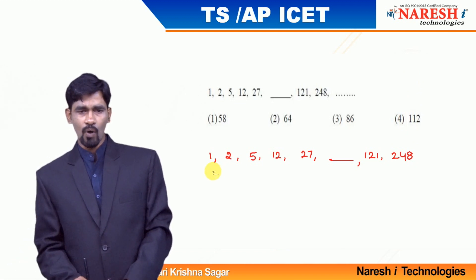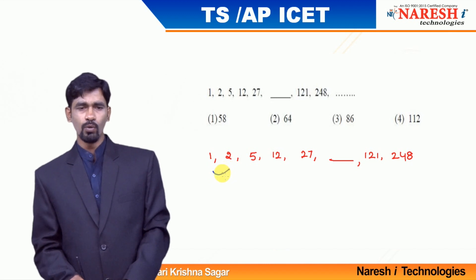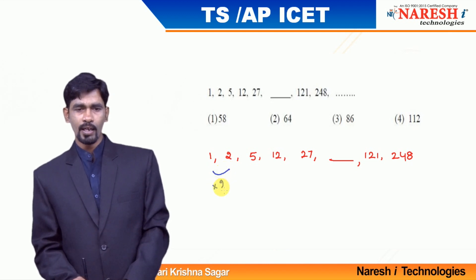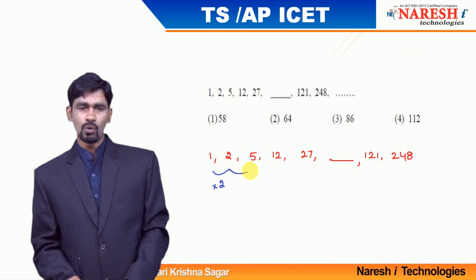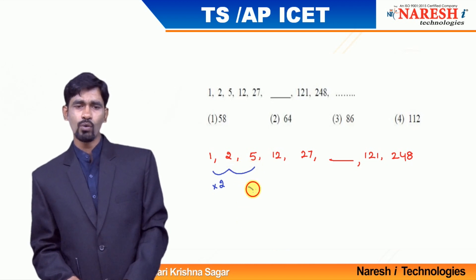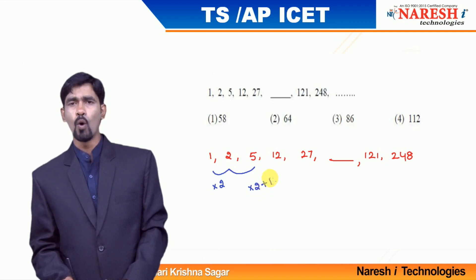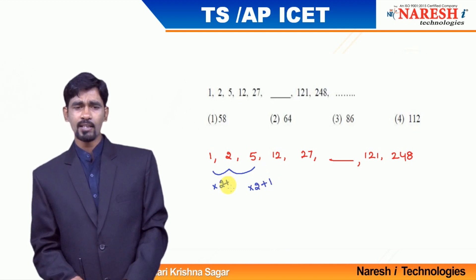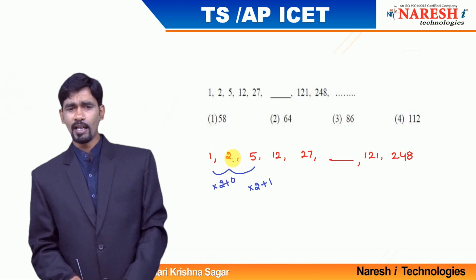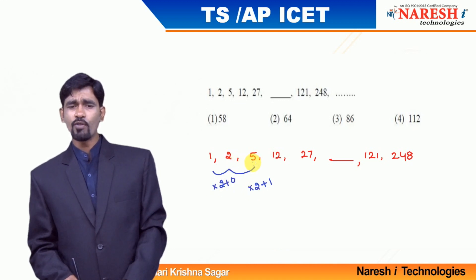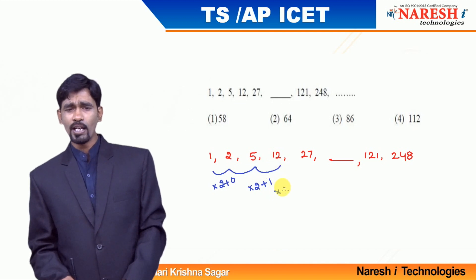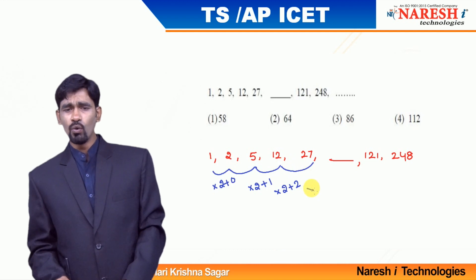By observing these numbers: 1 × 2 = 2. Then 2 × 2 = 4, but it is increased by 1 more. So I can write it as 1 × 2 + 0 = 2, then 2 × 2 + 1 = 5, then 5 × 2 + 2 = 12, then 12 × 2 + 3 = 27.